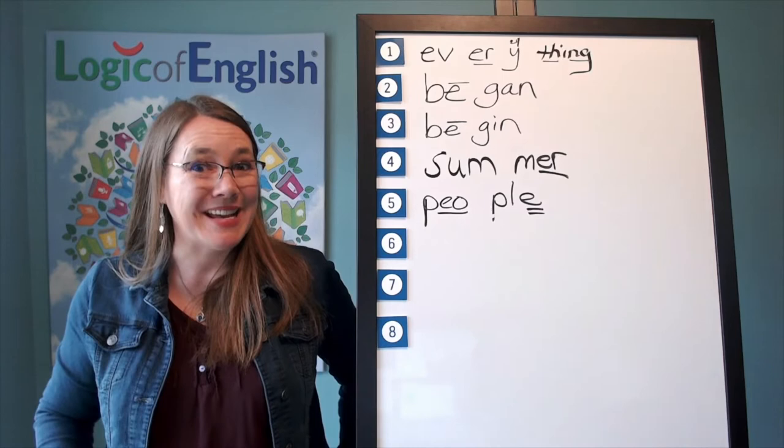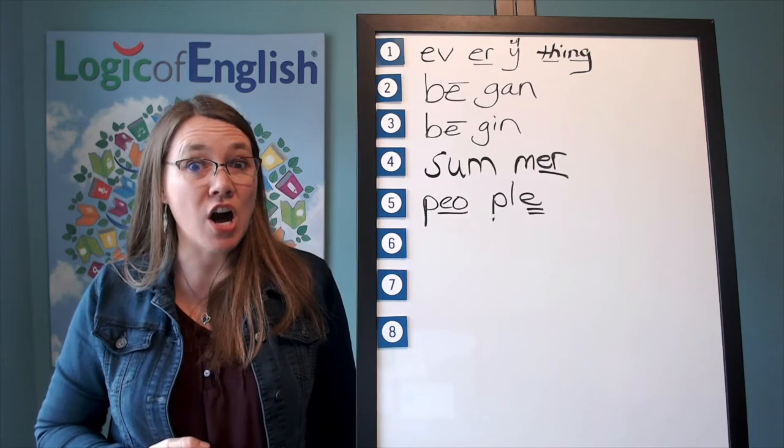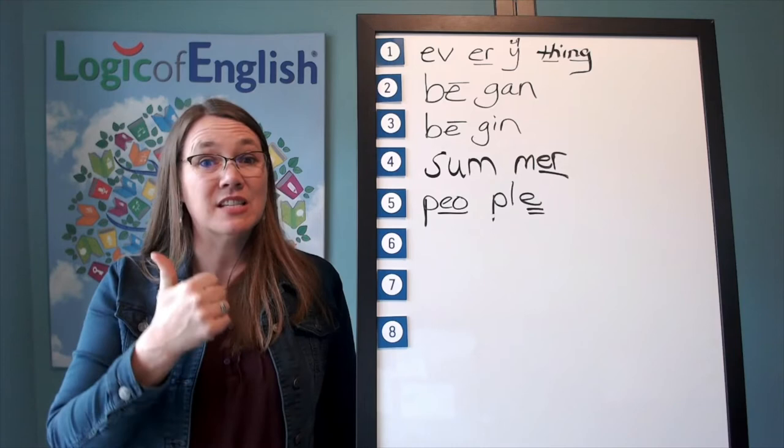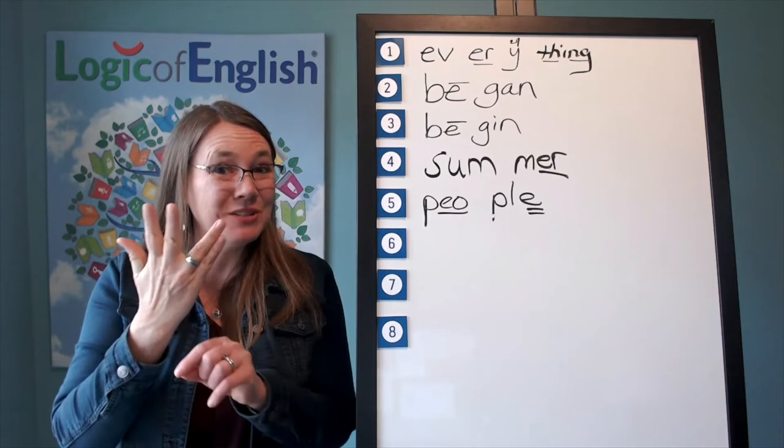The next word is tongue. His tongue is red. Tongue. Go ahead and say tongue. Now we will say to spell tongue. Tuh-ah-n-guh. Did you see that? It's a two-letter guh.